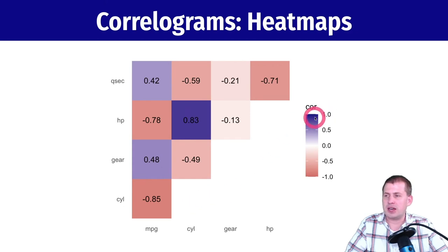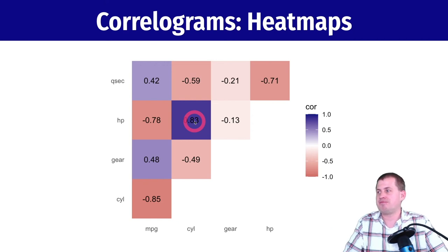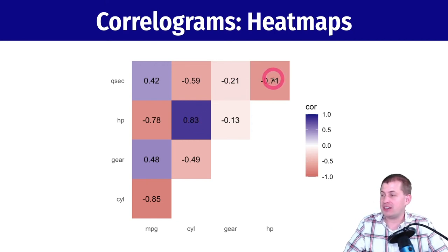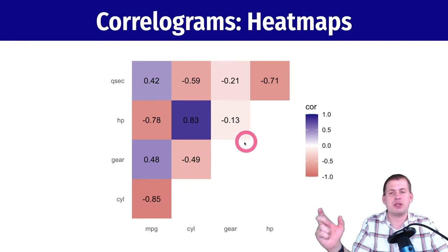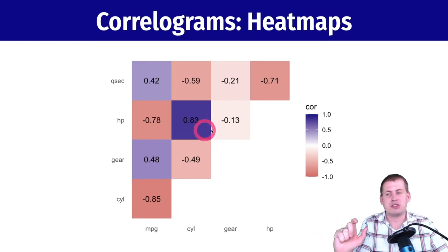The more blue the square is, the more positively correlated the two variables are. The more red it is, the more negatively correlated they are. If it's white right in the middle, there's no correlation. Here you can see the strongest positive correlation is between cylinders and horsepower in a car. The most negatively correlated things are miles per gallon with cylinders, horsepower, and q-sec. This miles per gallon and cylinders shows that as cylinders goes up, your miles per gallon is going to go down a lot. Correlograms are cool because you can glance at this really quick and see which pairs have the strongest correlation.